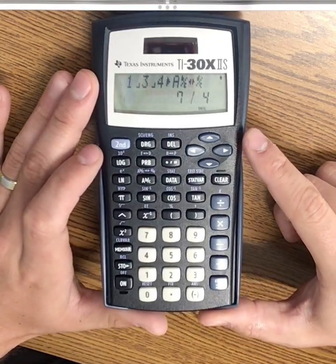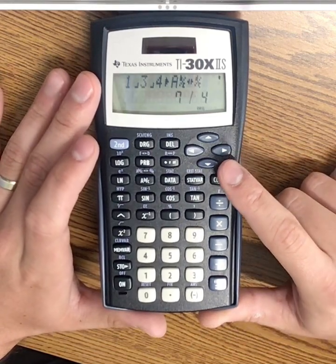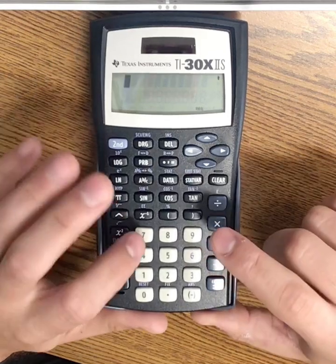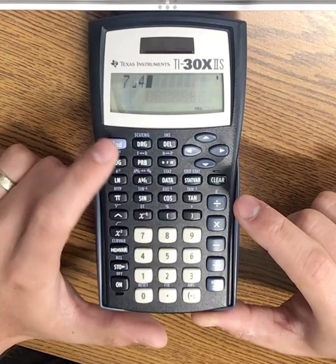Likewise, I can go backwards. I can say, what is 7 fourths as a mixed number? If I type in 7 fourths, and then do the second function,